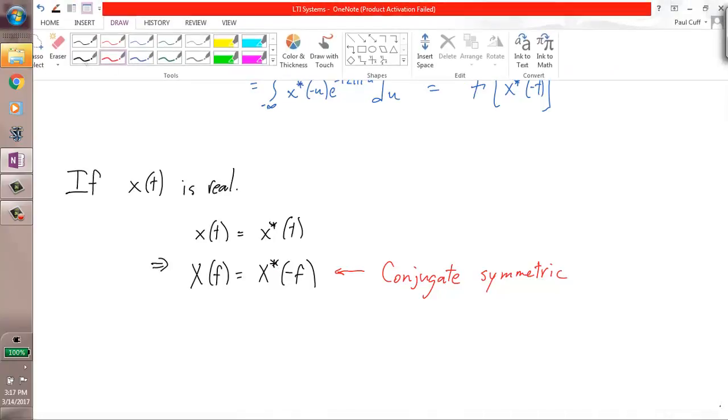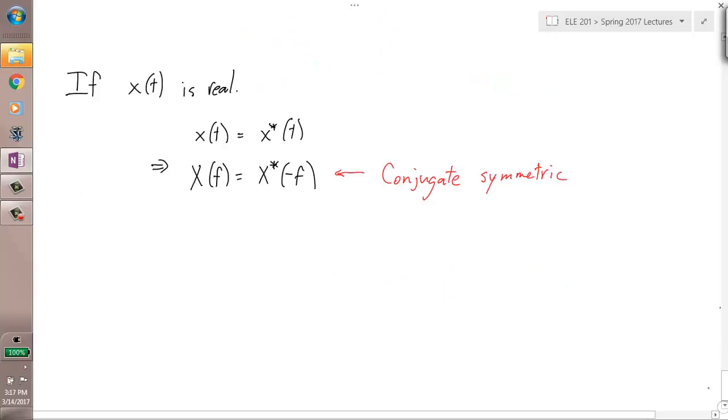There are other things to notice as well. If instead of just saying it's real, let's say, let's do if X is imaginary. This is something you'll encounter much less, but I just want to get these properties out there. If it's imaginary, then X of T equals negative X conjugate of T. Therefore, you would have the opposite sort of symmetry. X of F would equal negative X conjugate of negative F.